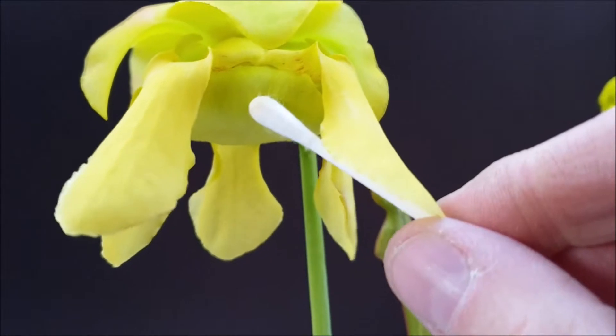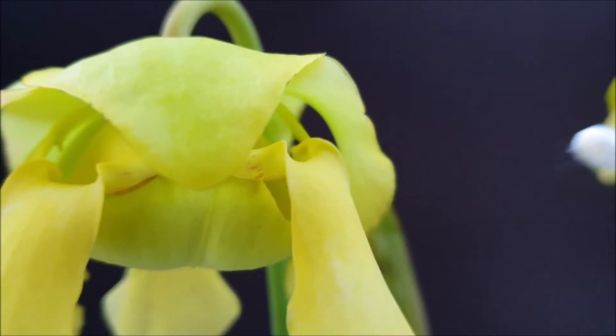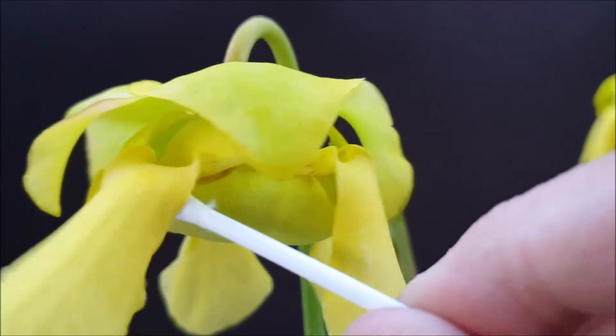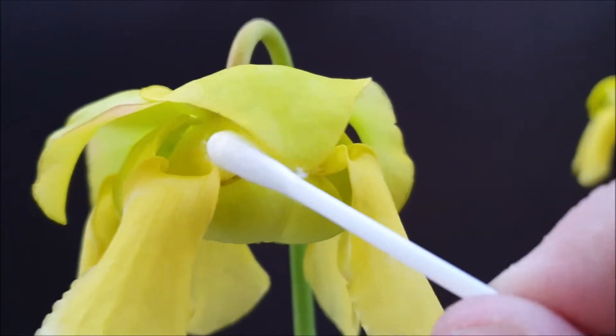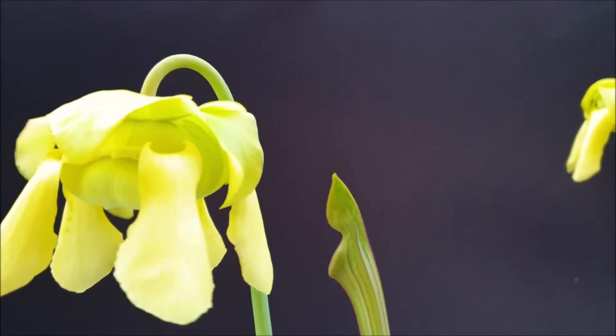And I'll show you where the pollen is later on. So what's the easiest way for the bee to crawl into the flower? Well, it's through the gaps here of the sepals. See how slightly elevated? That's how they crawl into the flower.